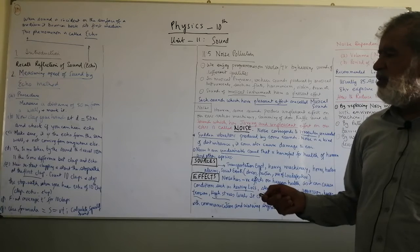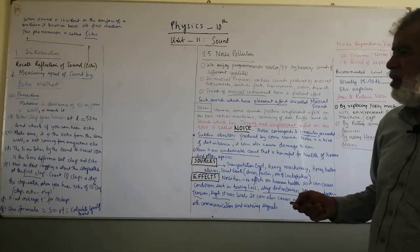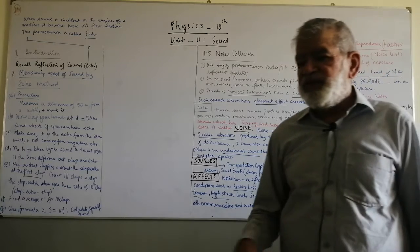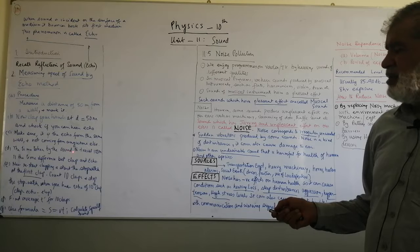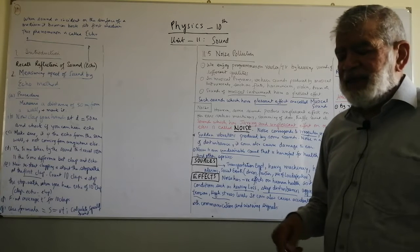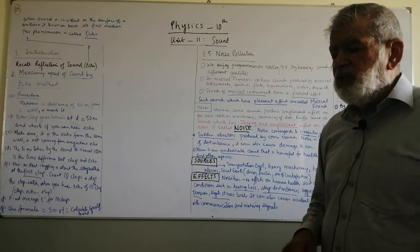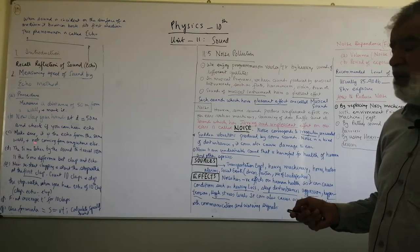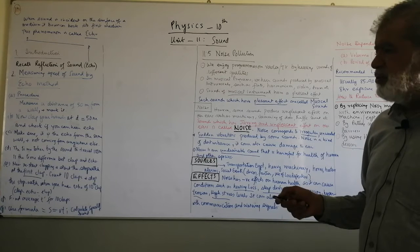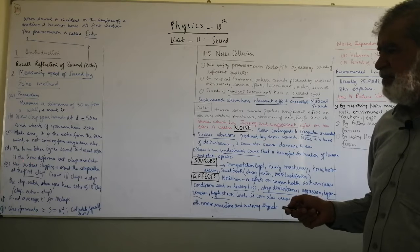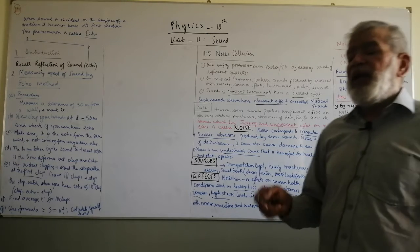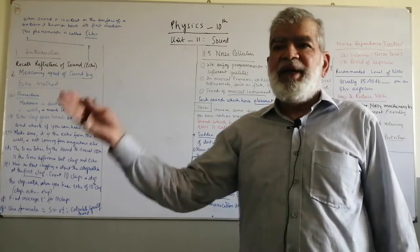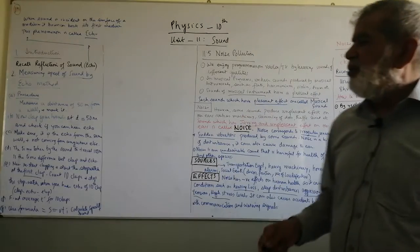Make sure that the echo comes from the same wall from which you have taken the measurement of 50 meters and not from any other source. The time taken by the sound to travel 100 meters — 50 meters going and 50 meters coming back — is the time difference between the clap and the echo. When you clap, the sound waves travel, strike the wall, and come back as an echo.